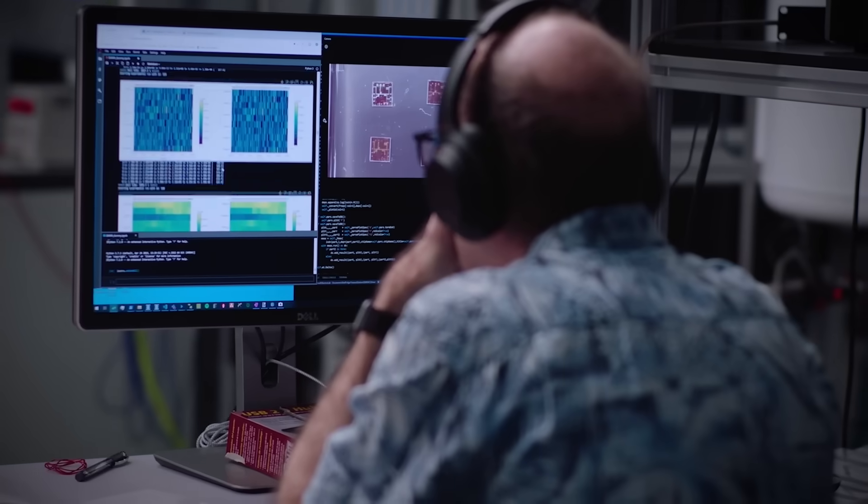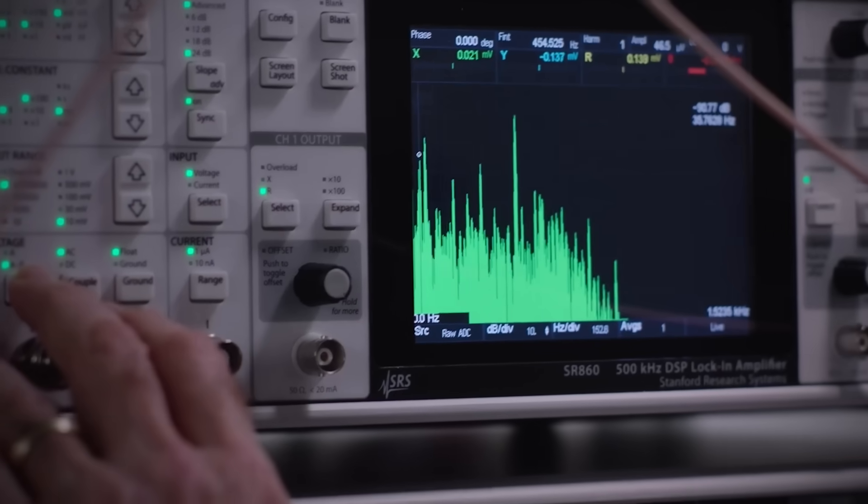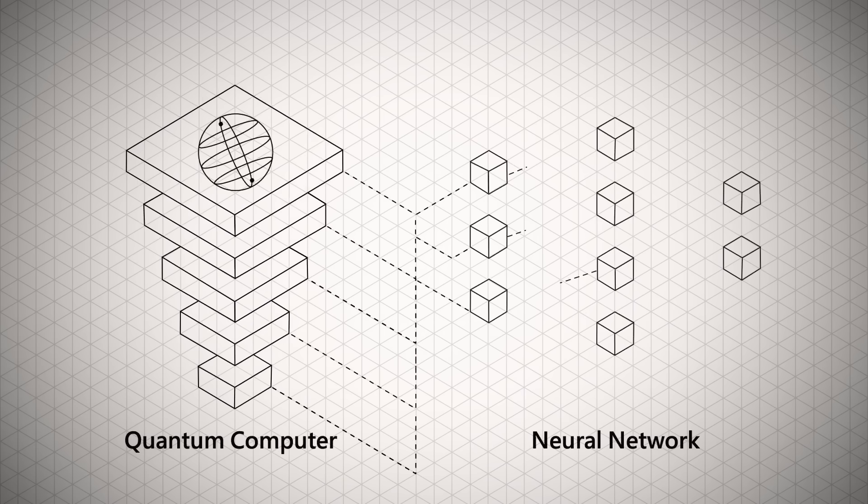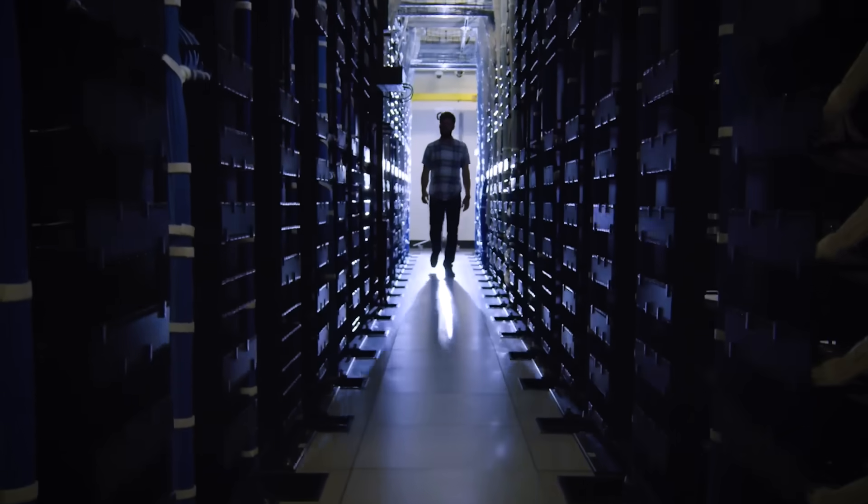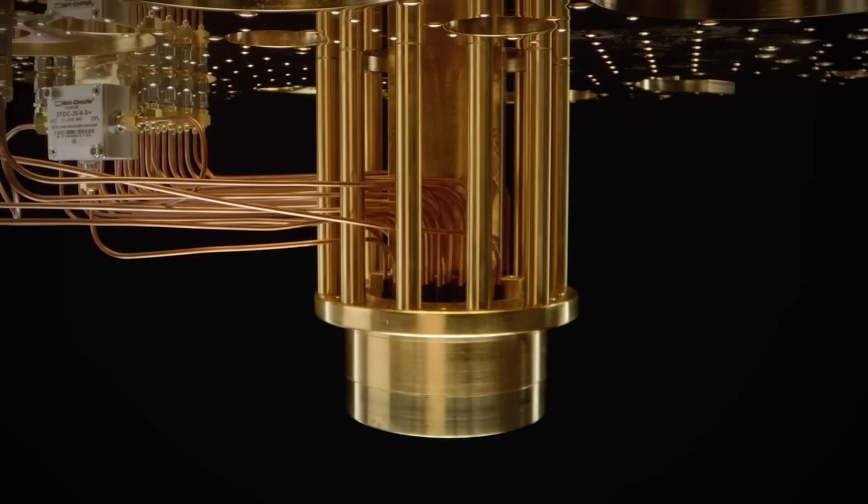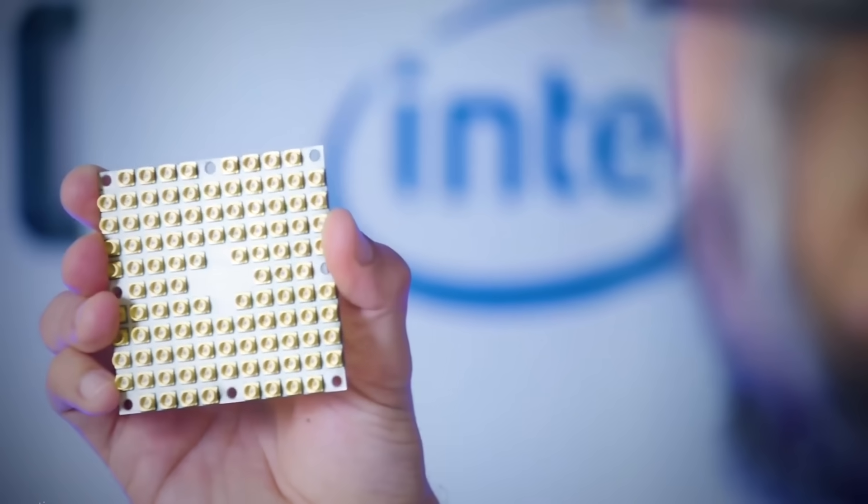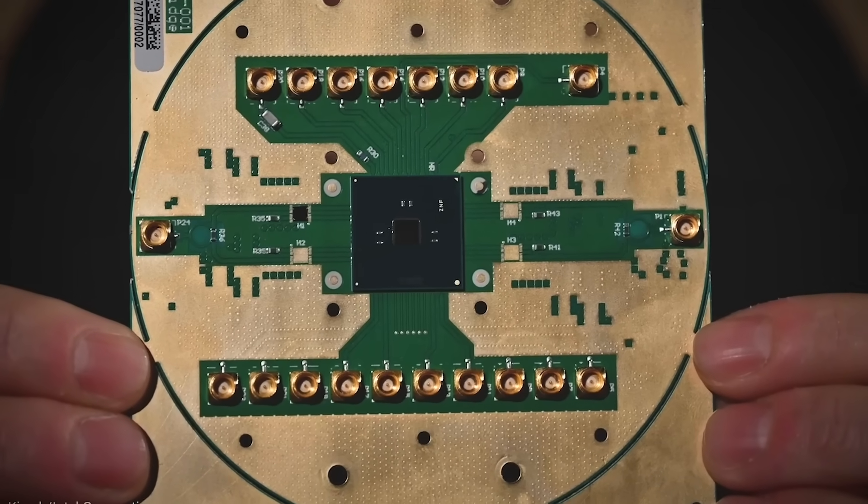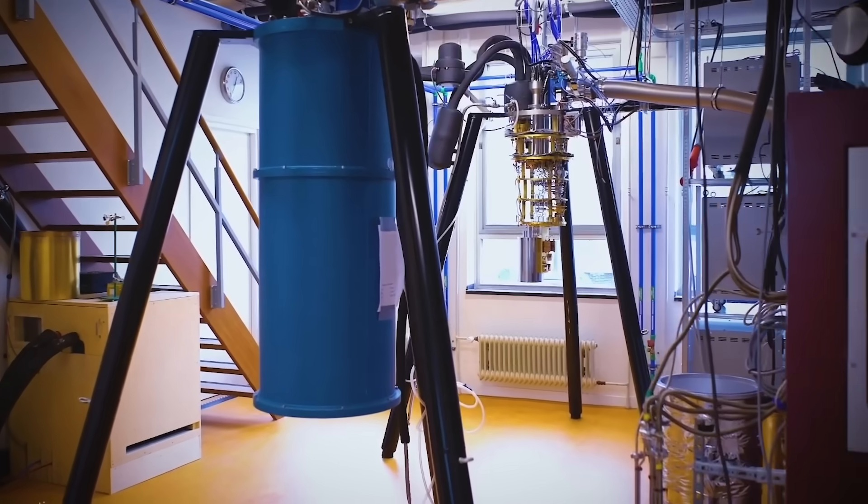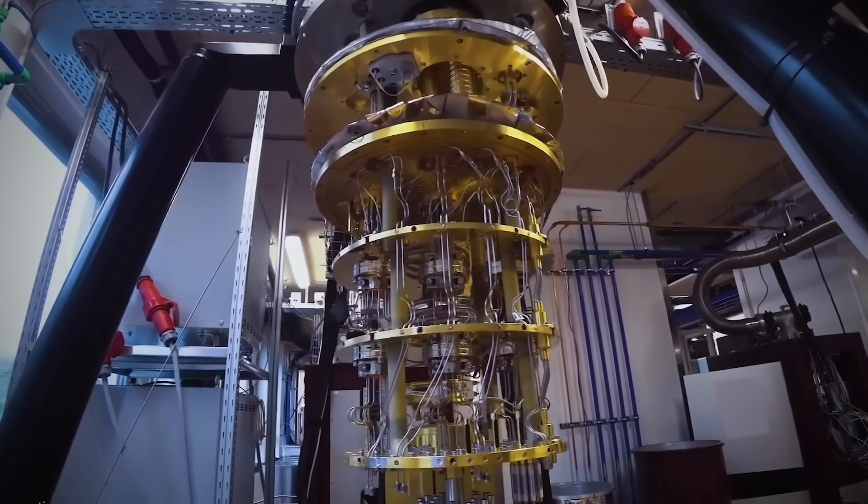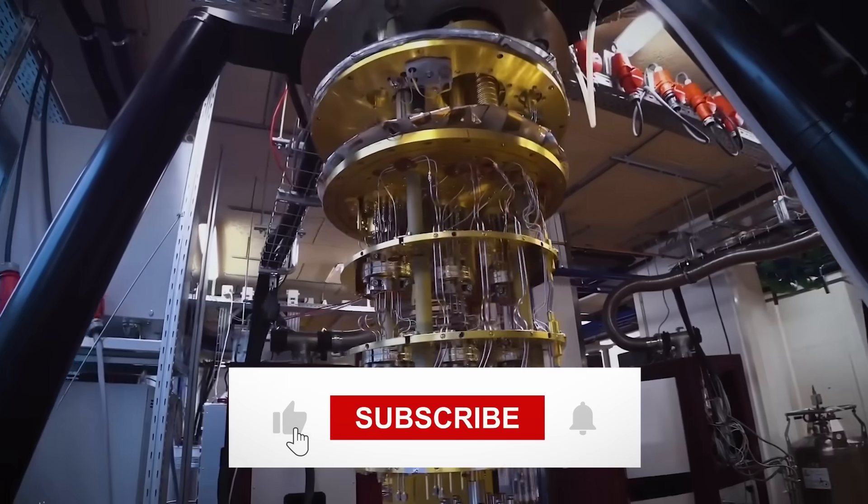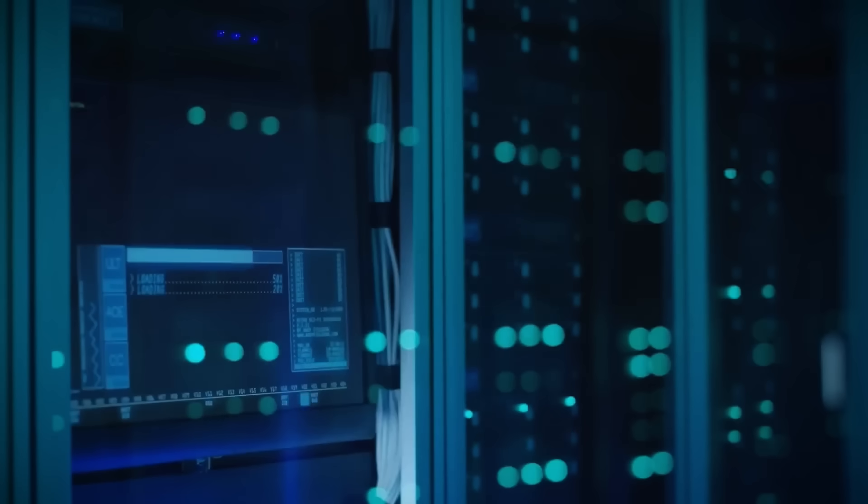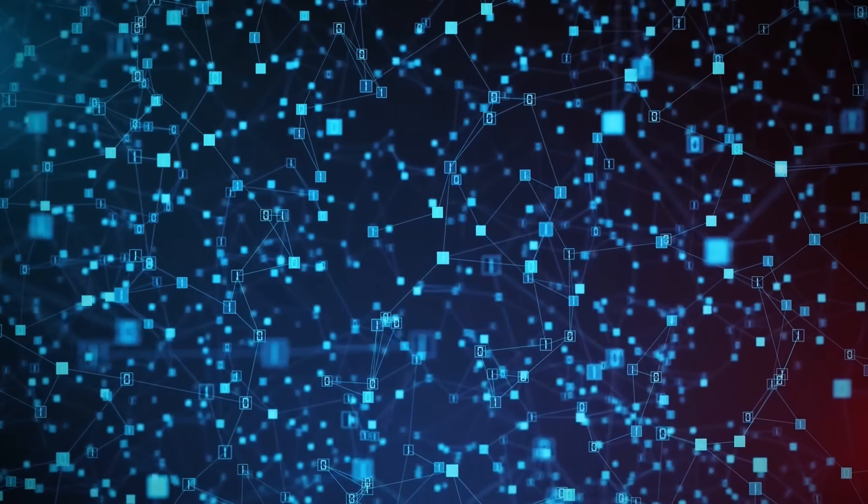But here's the twist that changes everything. This lab wasn't even building qubits like Microsoft's other quantum facilities. They were solving something potentially more valuable: how to control millions of qubits without miles of wiring or impossible cooling requirements. Their breakthrough cryogenic chip could revolutionize the entire field by eliminating the biggest barrier to practical quantum computers. If you're into breakthroughs that big tech won't talk about until they're already five steps ahead, make sure to subscribe. We dig into the stuff they bury in press releases and reveal what's really happening in the race for quantum supremacy.